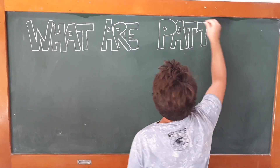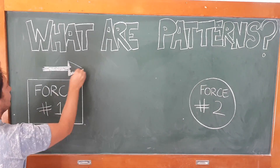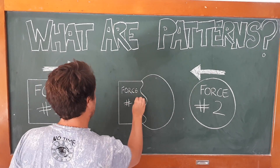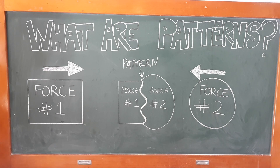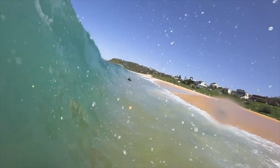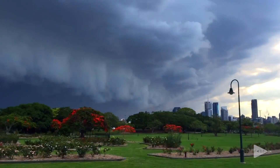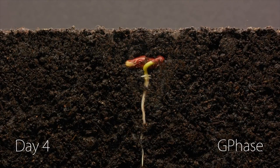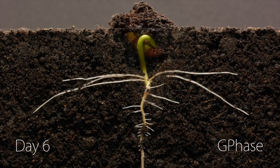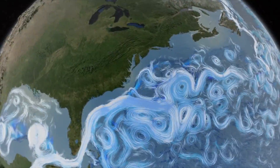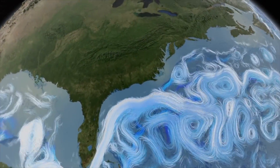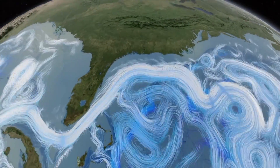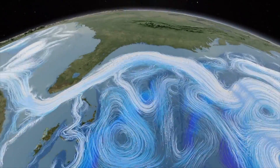What are patterns? Patterns are edges which are created when two forces meet and interact. For example, where the ocean meets the shoreline, where hot air meets cold, or where a seed meets the soil. Patterns allow us to identify flows of energy and beckon us to understand how to redirect, stop, or more importantly harness those flows of energy.